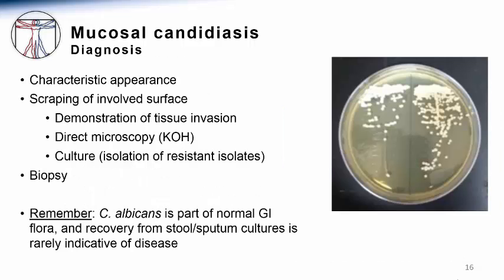Despite the varied possibilities in the differential diagnosis, the confirmation of mucosal candidiasis is usually based on its characteristic clinical appearance. If there's any question about the diagnosis, one can scrape the involved surface or film and examine the sample by direct microscopy using potassium hydroxide, or KOH, to dissolve the host cells. This treatment will reveal the round, yeast-like cells and the filamentous forms characteristic of many Candida species. Rarely, culture of these anatomic sites can be used to help make the definitive diagnosis. Culture is most helpful for recurrent symptoms or for documenting the presence of a drug-resistant Candida isolate.